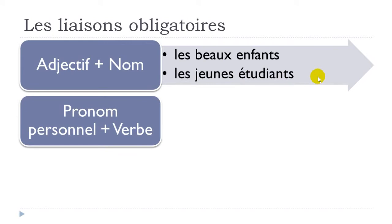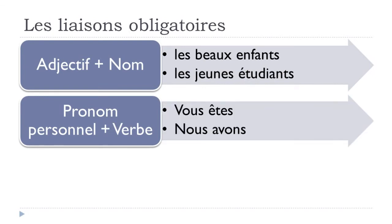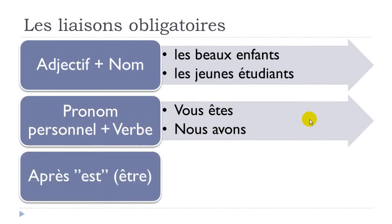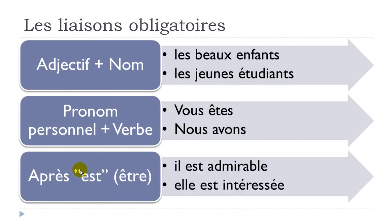If you have a pronom personnel — I, you, he, she — followed by a verb, you make the liaison. I took 'vous' with the verb être (to be): vous êtes. And with avoir (to have): nous avons. Also, the verb être at the third person singular — il est or elle est — you should definitely make the liaison if something follows: il est admirable, elle est intéressée. In these cases the liaison sound is T.